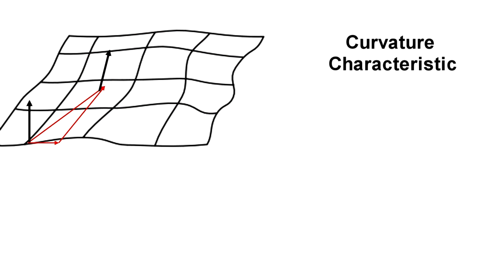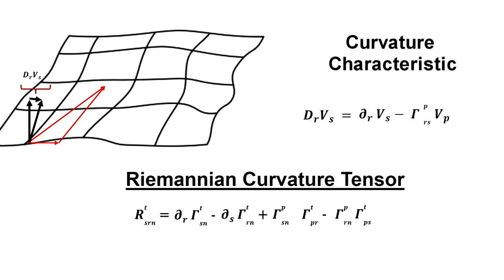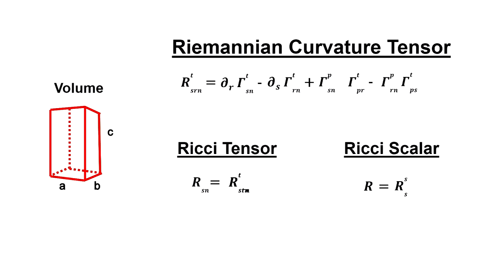Riemann developed the tensor that precisely measures how much the components of a vector change when it is parallel transported along a small closed curve. This is called the Riemannian curvature tensor. A subset of this tensor was developed by a mathematician named Gregorio Ricci Curbostro.